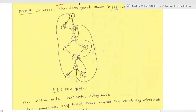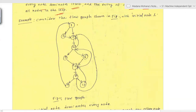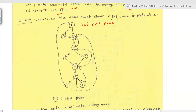Consider the following flow graph with initial node 1. We need to find the dominators for all nodes. Various loops are present: 4→2→3→4, 7→2→4, 8→2→3, and 9→2→1. By default every node dominates itself. For example, node 3 dominates node 4 means starting from initial node 1, every path to 4 goes via 3.